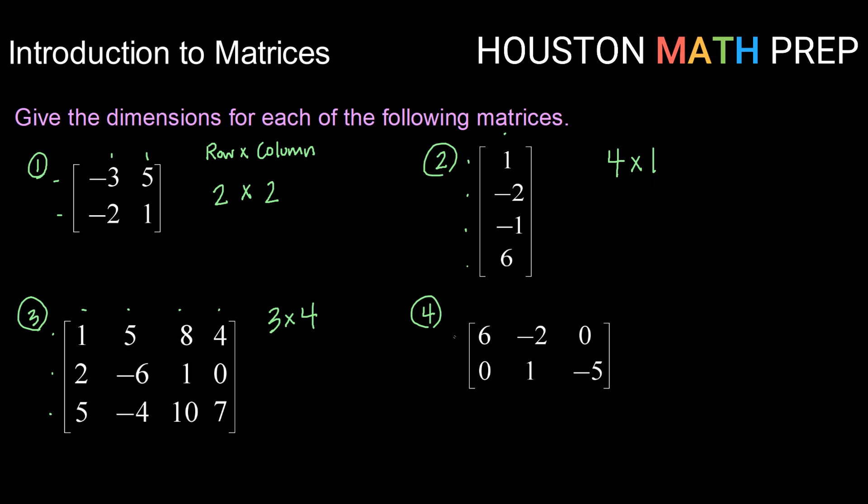And example four, counting up our rows first, we have one, two rows by one, two, three columns. Example four is a two by three matrix.